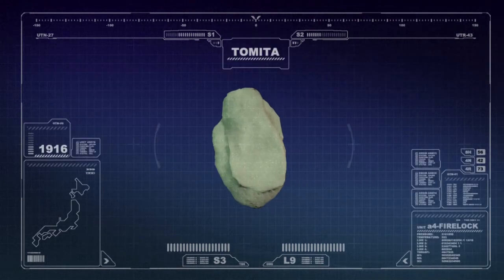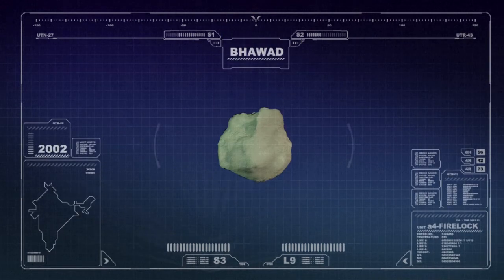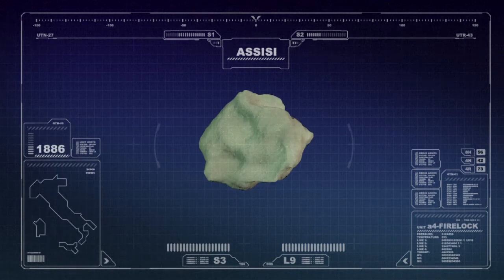Meteorites are named by the Meteoritical Society, an organization that catalogues meteorites according to where they fall.